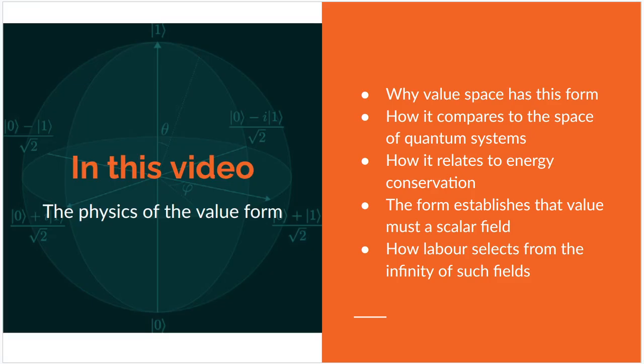In this video I'm going to be talking about the physics of the value form and discuss why value form has the shape that it had that I described before, how this compares to the space that you get in quantum or optical systems, how it relates to energy conservation, how it establishes that value must be a scalar field, and talk about how labour selects from the infinity of such fields.